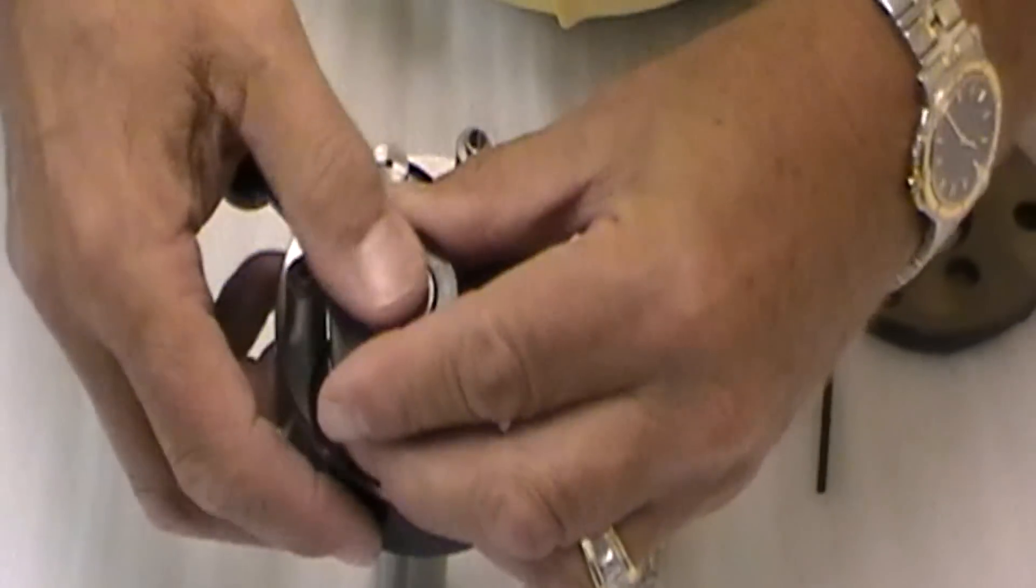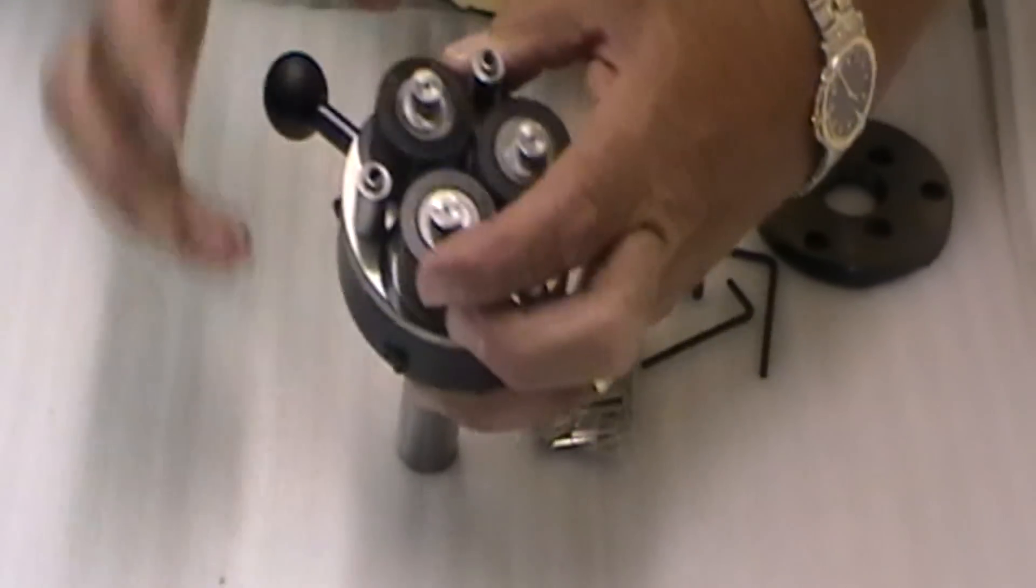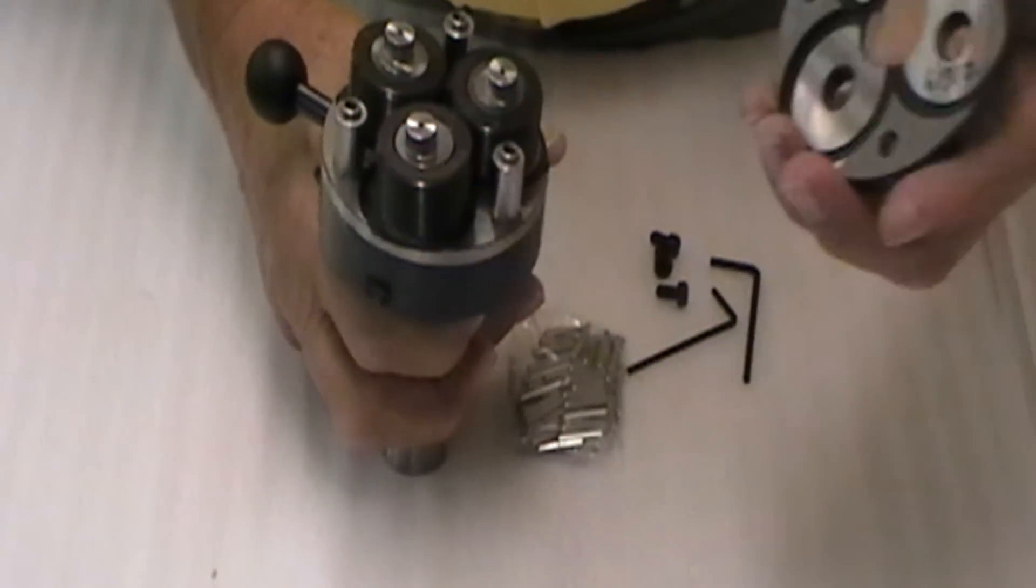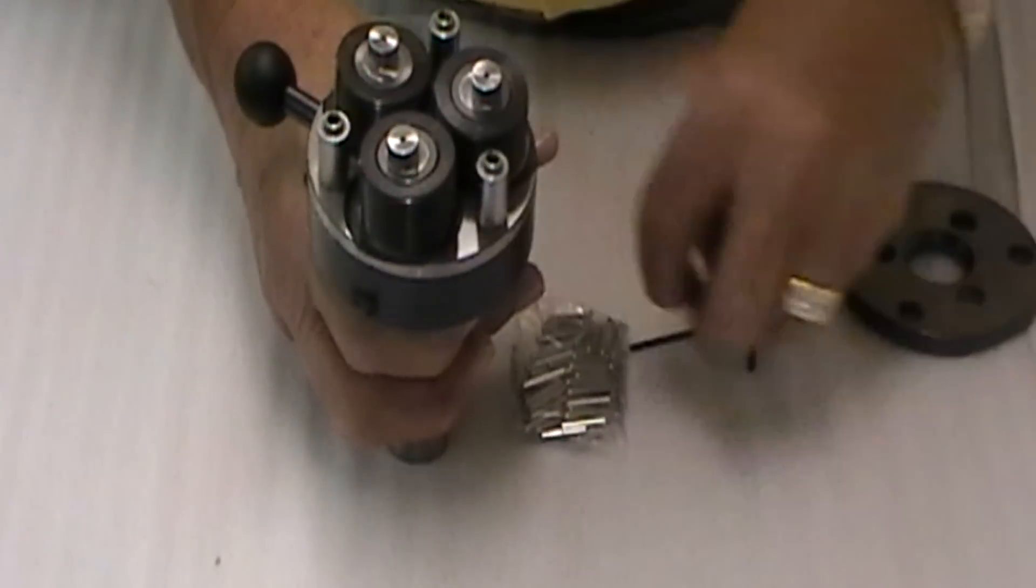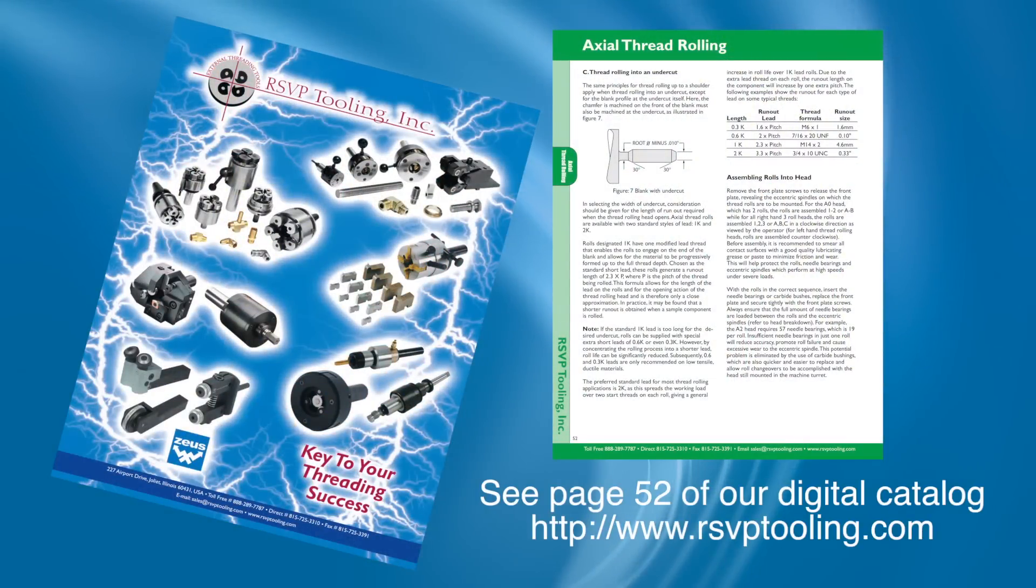A, B, and C. Loaded in again, reassembling your front plate with your three screws and you have successfully reassembled your actual thread rolling head. Thank you and have a good day.